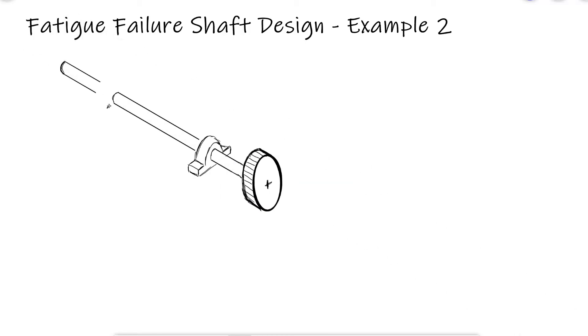A rotating solid steel shaft is simply supported at points B and C. The force F from the drive gear is located at a pressure angle of 20 degrees. The shaft transmits a torque to point A of 350 Newton meters.